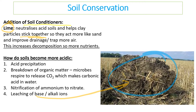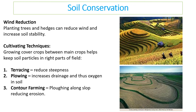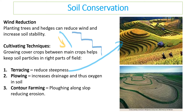One way to prevent leaching and unwanted movement of water through soil is by adding straw, which helps the soil stick together and increases organic matter. We can use wind reduction by planting trees and hedges, which increases soil stability and blocks the wind. Cultivation techniques such as terracing reduce the steepness of slopes so minerals don't leach downhill. Ploughing can increase drainage and oxygen in the soil, improving soil quality. Contour farming involves ploughing along the slope to reduce erosion.